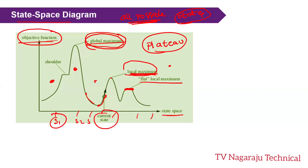The current state is simply where we are right now in the search. A shoulder is similar to a plateau but after moving in some direction it has an uphill edge, meaning the algorithm can move forward to get a better solution.